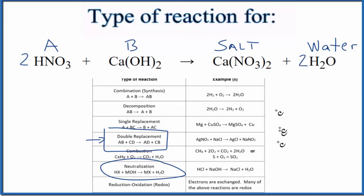So these are the types of reactions. So one reaction can be classified as two different types. This is Dr. B with the type of reaction for HNO3 plus Ca(OH)2. Thanks for watchin'.